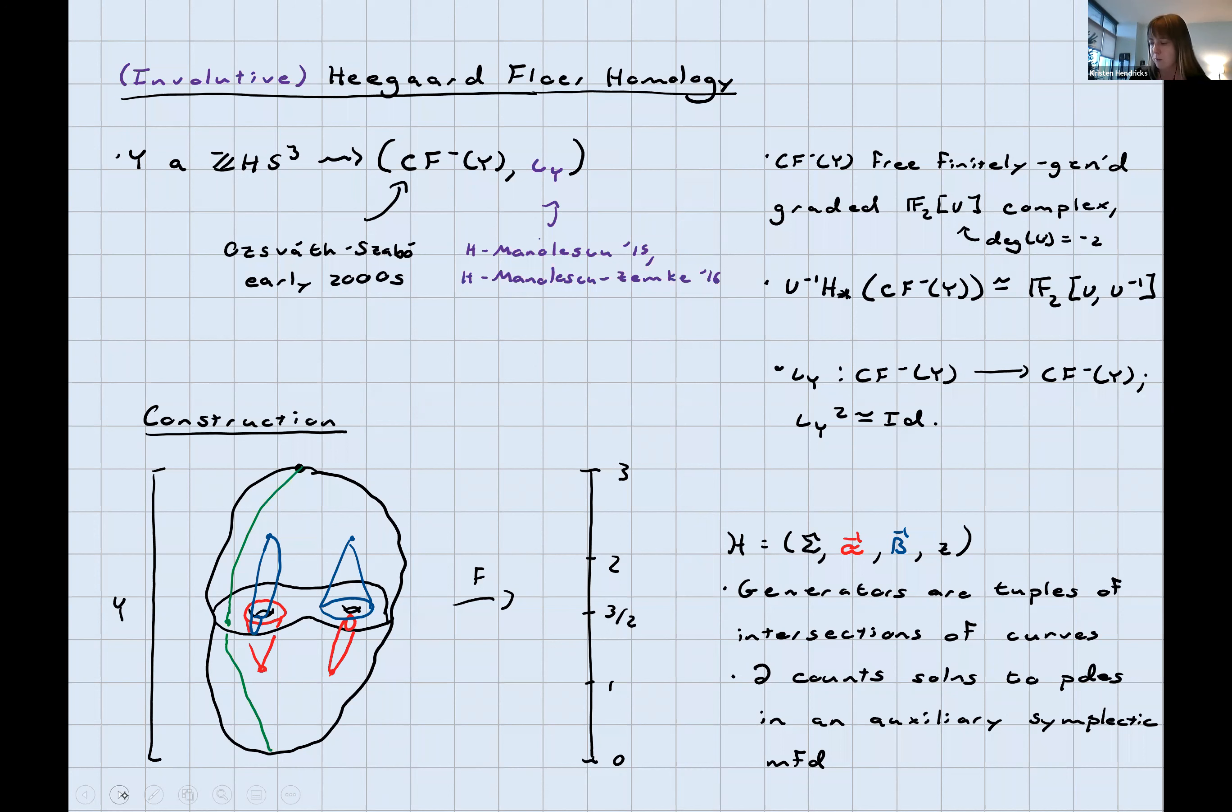Where is this coming from, the two minute version? How do you get Heegaard Floer homology? You take your three manifold and you take a self-indexing Morse function on it. In the version I want, you have one index zero critical point and one index three critical point. If I look at the pre-image of three-halves, that's not a critical value, so I get a surface. It's genus G, where G is the number of index one or equivalently index two critical points. I look at the ascending manifolds of my index one critical points, and they intersect the surface in some collection of curves drawn in red and called the alpha curves. Similarly, I look at the descending manifolds of my index two critical points, and they intersect the surface in some other collection of curves called the beta curves. I also keep track of where a flow line from the index three to index zero critical point pierces the surface, and that's a base point.